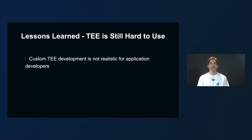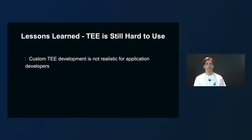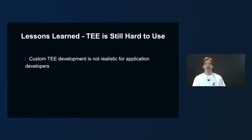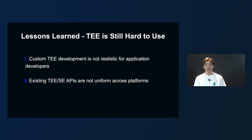Our next lesson is about using TEEs. We tried custom TEE development, but while very flexible, we found it was not a realistic solution for application developers. The licenses are very expensive, and so is the infrastructure required for the development. Also, device support was very limited. So you need to think about the fallback option — and then the question is, why not just use the fallback option? Since we were not able to make our own custom trusted application, we tried really hard to rely on each platform's native TEE and SE APIs. But the features are not uniform across platforms, which makes this not easy.